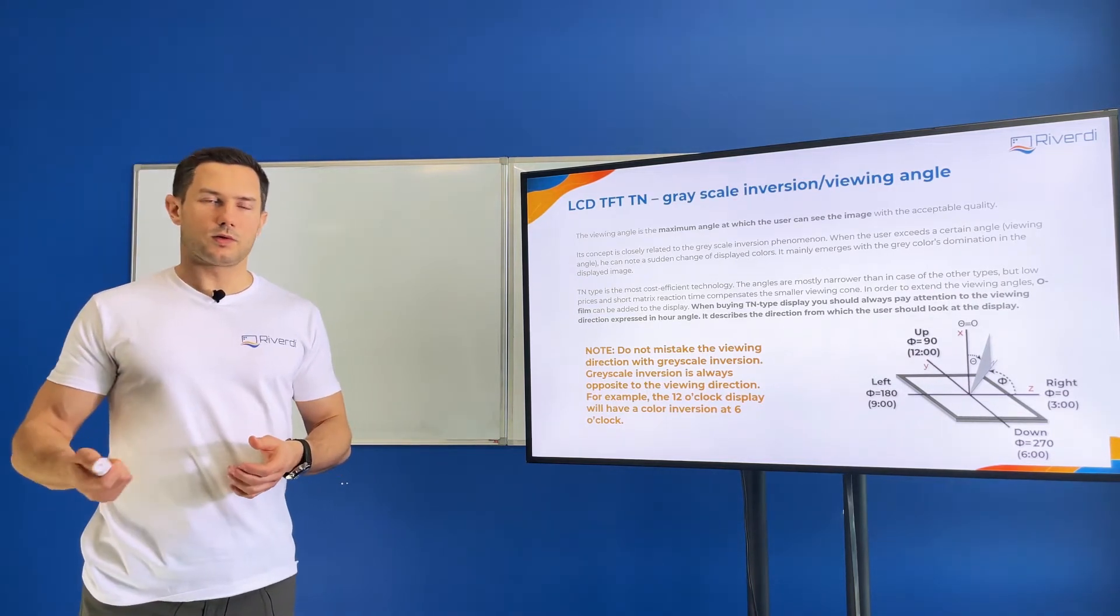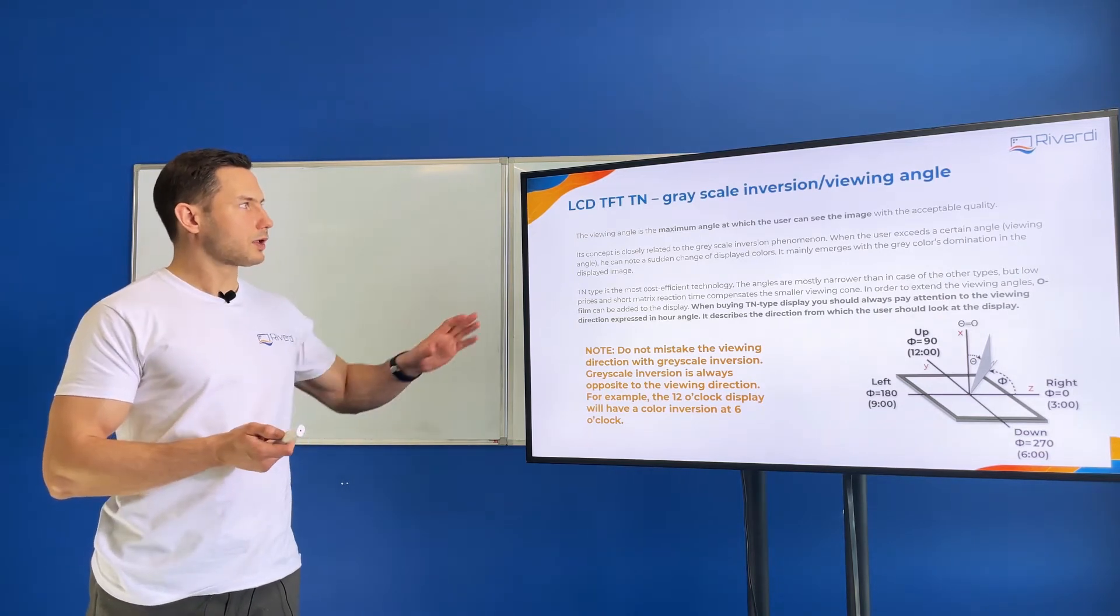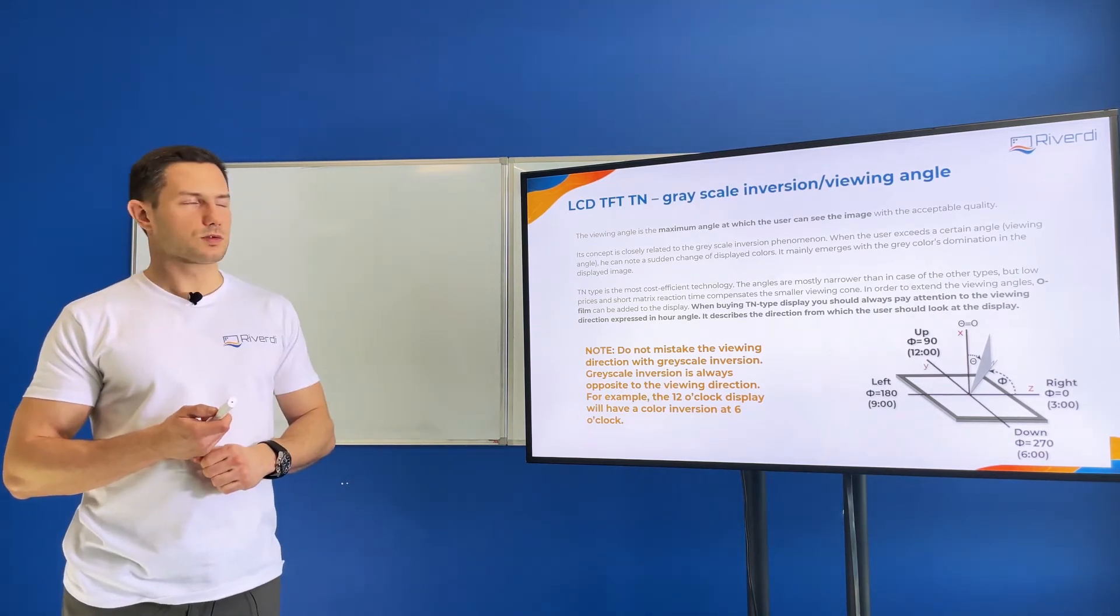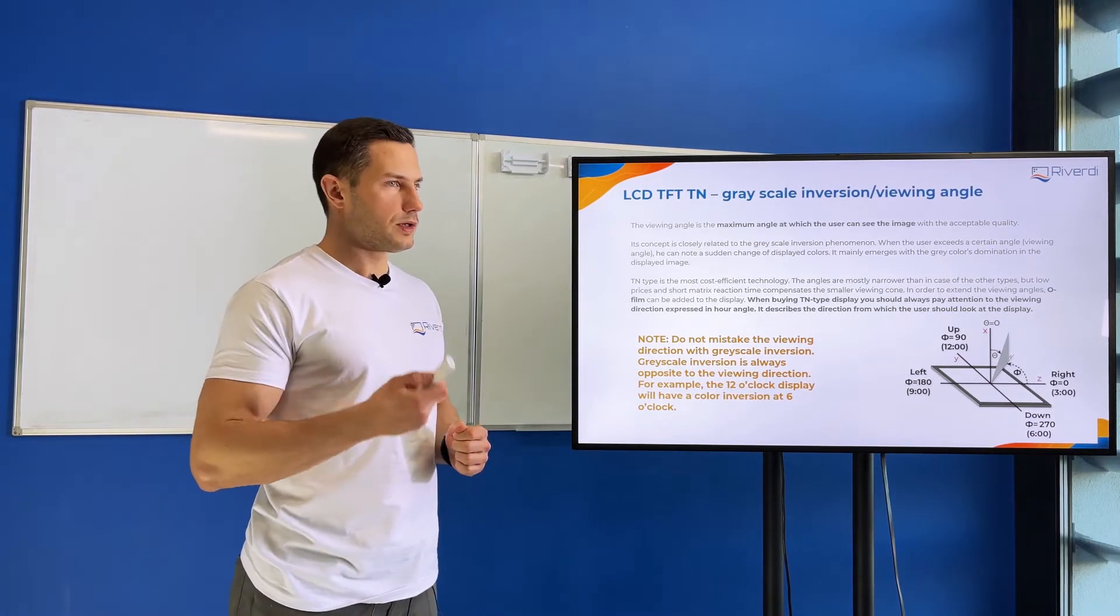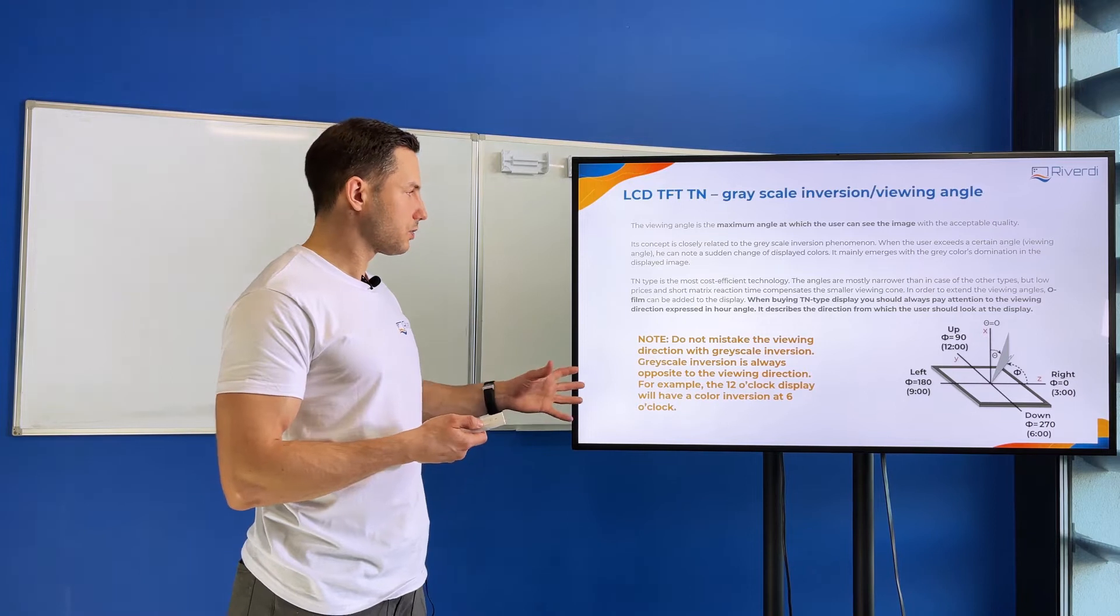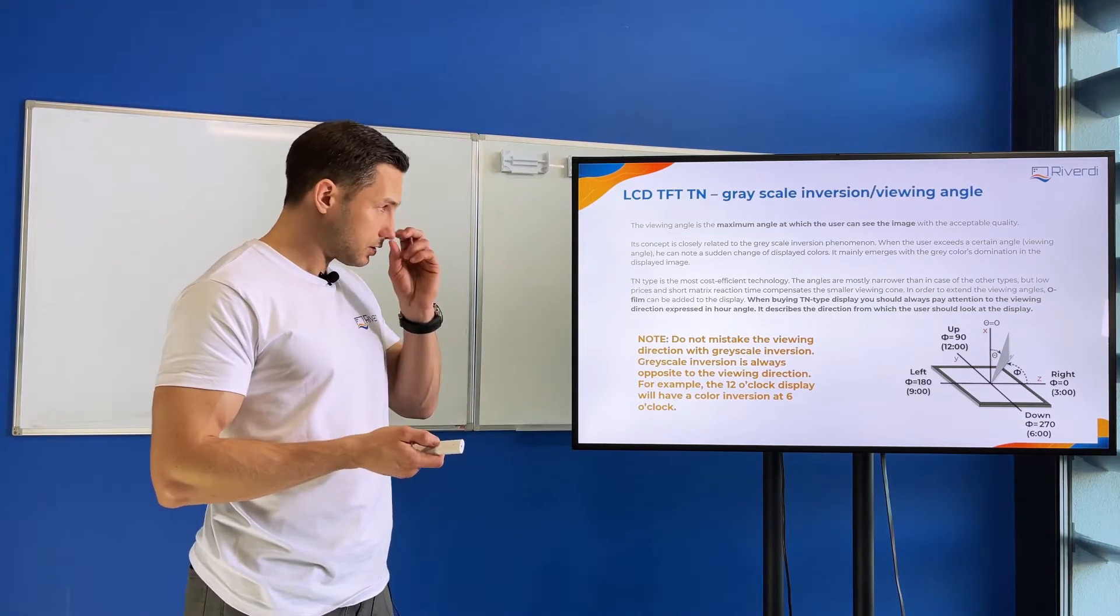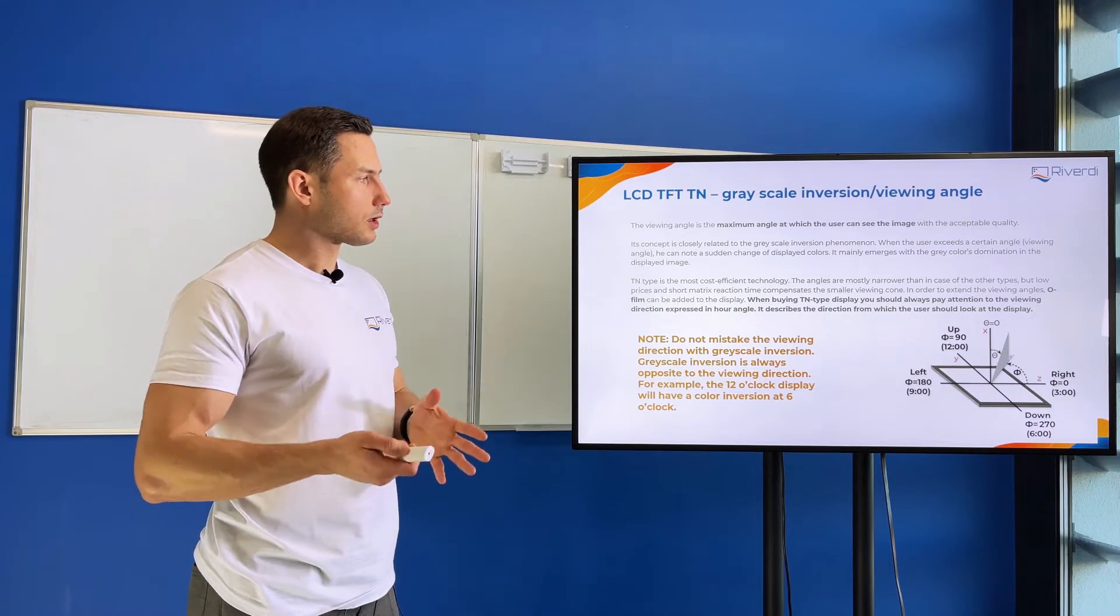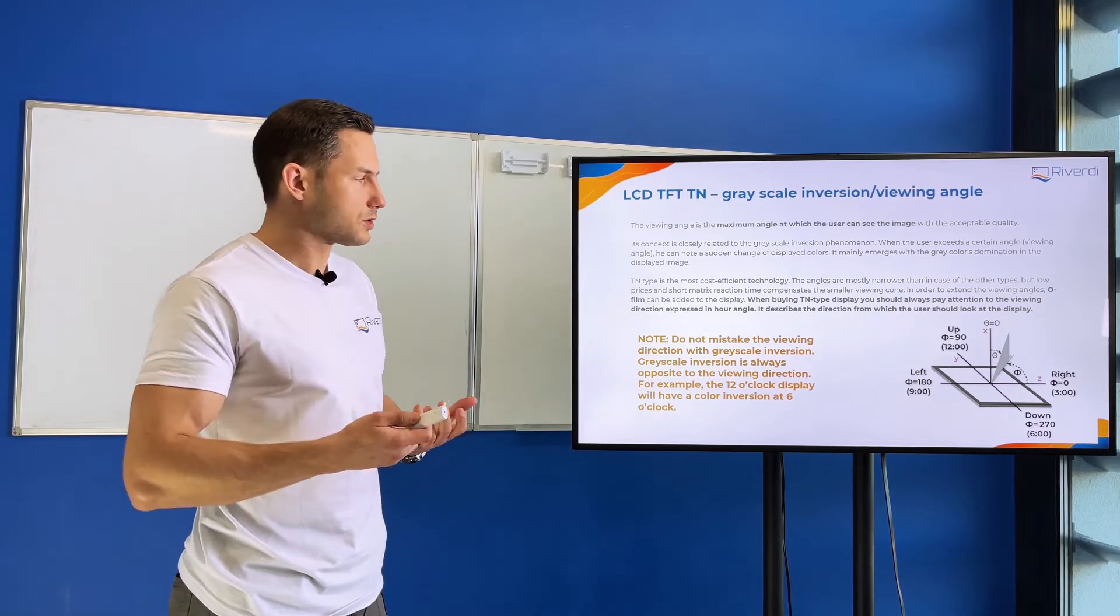But if we buy the more common or older display technology, which is TN (twisted nematic), we need to think about where we will use the display because we'll have this problem with grayscale inversion, and one viewing angle will not be good for humans to see.